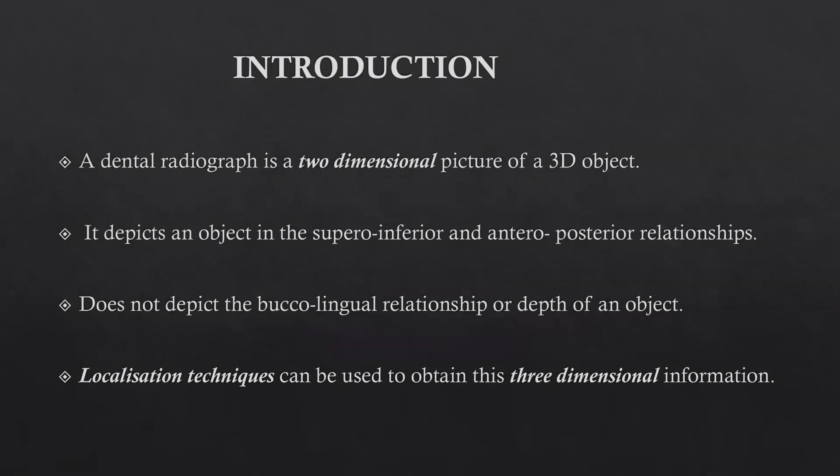A dental radiograph is a two-dimensional view of a three-dimensional object that is present in the jaws. Many times diagnosis becomes difficult for a clinician because it only depicts an object in the supero-inferior and antero-posterior positions. It does not give us an insight about the buccolingual relationship or the depth of an object, and to overcome this there are certain techniques called localization techniques.